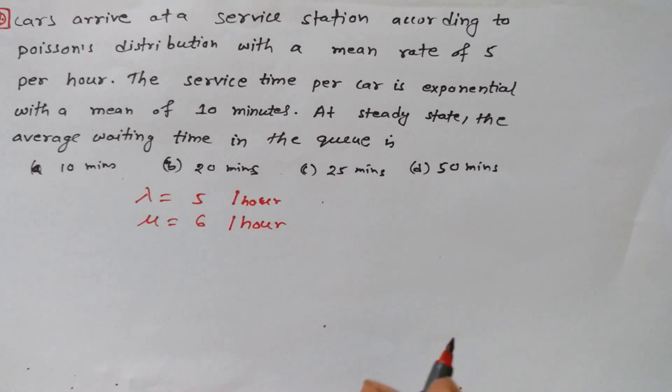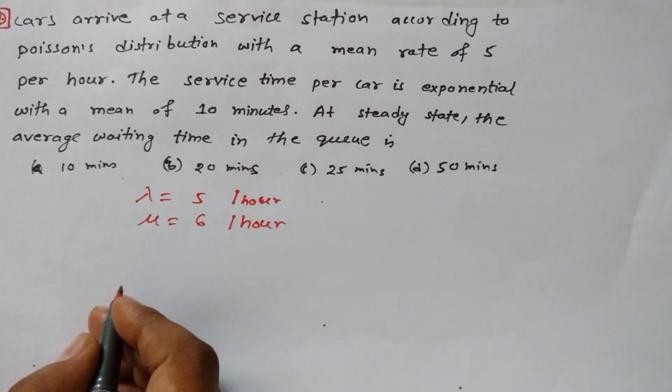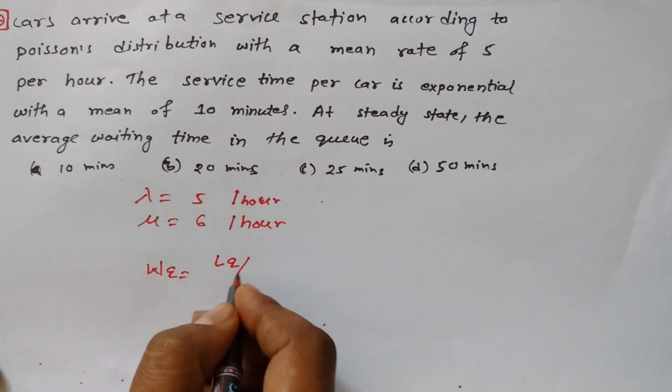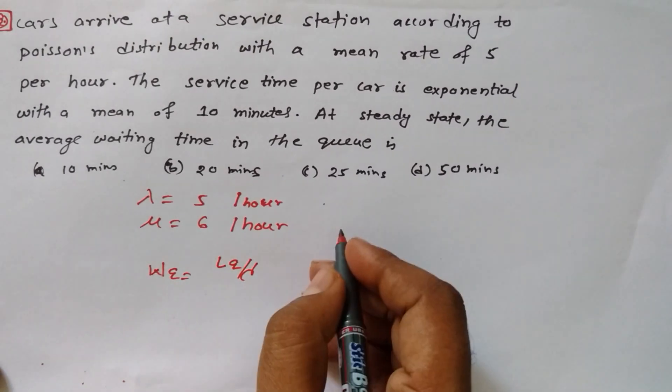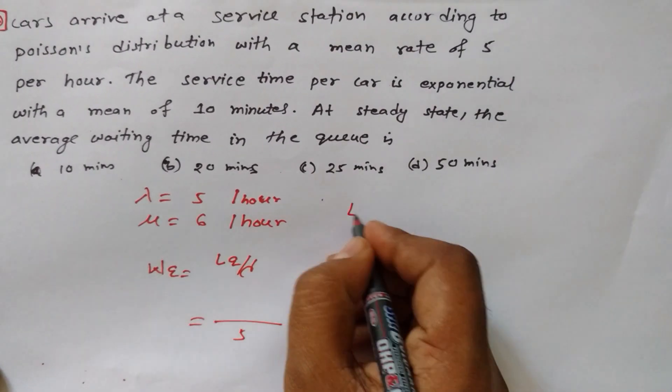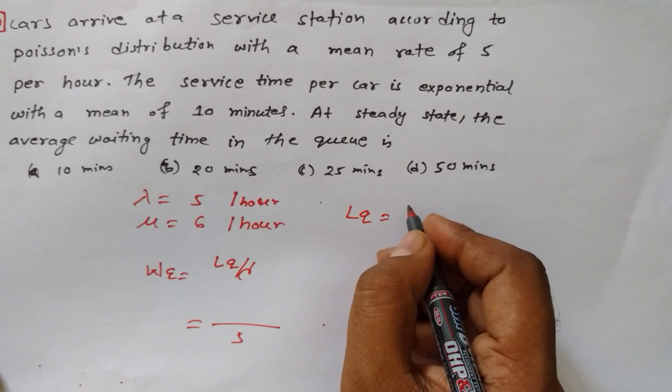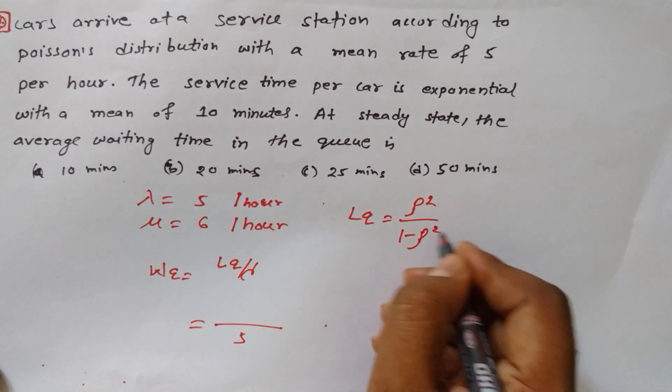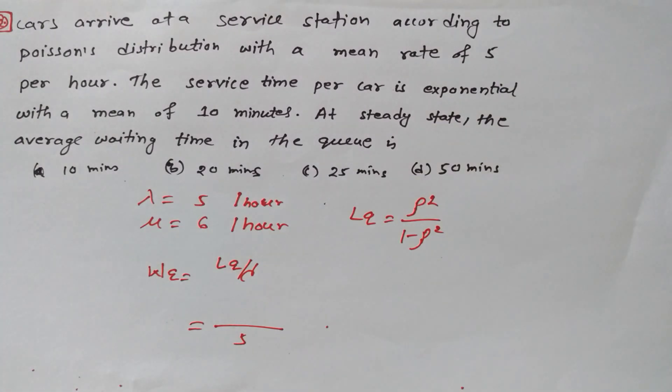Now we've got the formula for finding average waiting time in the queue. WQ is equal to LQ by lambda. What is LQ? Basically length of the queue. Lambda is 5, we have to find out LQ. LQ is equal to rho squared over 1 minus rho. What is rho? Utilization factor.